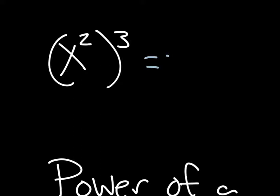It's telling us that we're doing x squared times x squared times x squared. We have three of those. That's what the cube tells us.